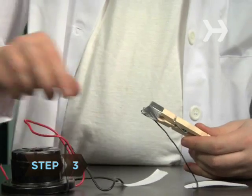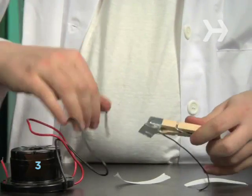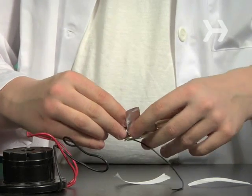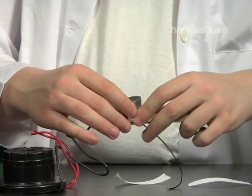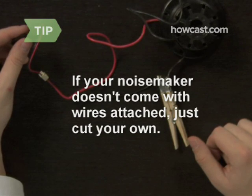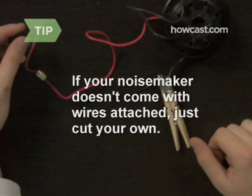Step 3. Locate the wire running from the negative pole of the noise maker, the pole marked with a minus sign, and connect it to the other tip of the clothespin. If your noise maker doesn't come with wires already attached, just cut and strip another piece of your own to use.